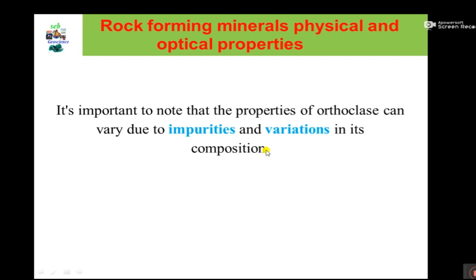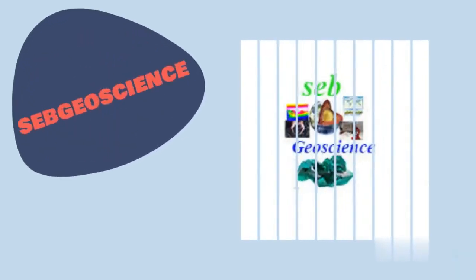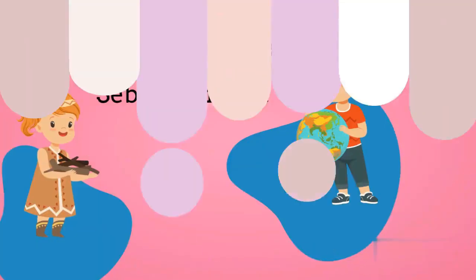It is important to note that the properties of orthoclase can vary due to added impurities or variation in composition. Impurity is the cause for changing physical or optical properties of minerals. Additionally, orthoclase is an essential mineral in the formation of igneous rocks, particularly granite. Orthoclase, or potassium feldspar, is an important mineral that forms rocks, most commonly granite. Subgeoscience deals about Earth's rocks and geology, GIS and remote sensing, technology — subscribe to Subgeoscience.